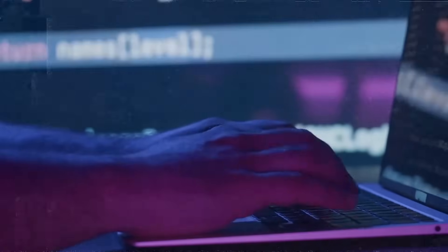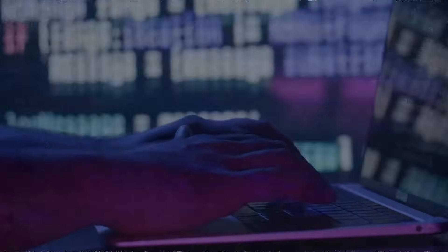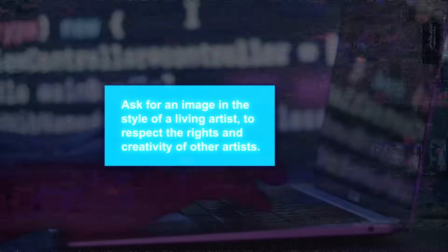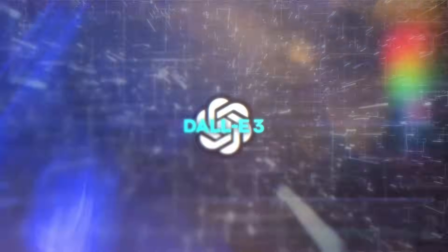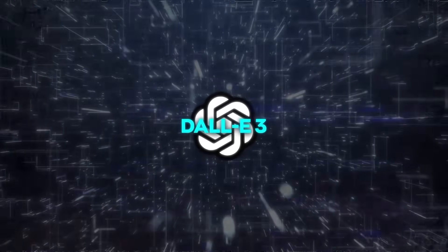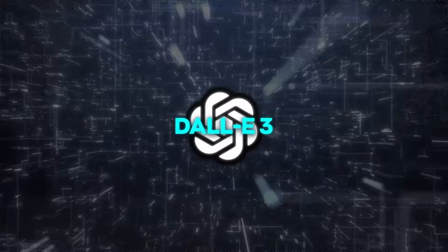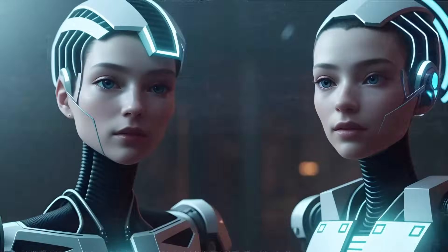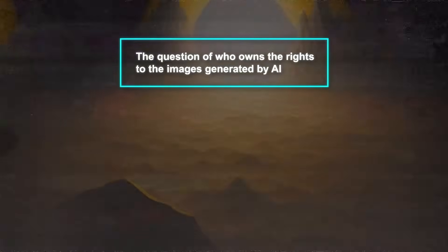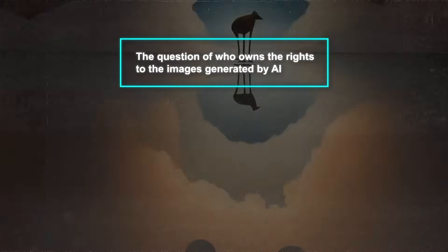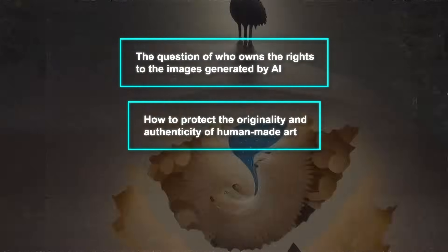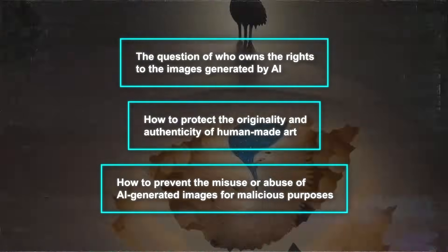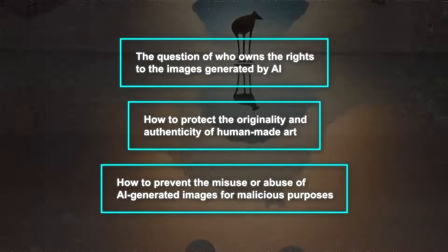OpenAI has also designed DALL-E3 to decline requests that ask for an image in the style of a living artist, to respect the rights and creativity of other artists. However, these steps are not enough to ensure the ethical and responsible use of DALL-E3. There are still many unresolved issues, such as who owns the rights to AI-generated images, how to protect the originality and authenticity of human-made art, and how to prevent misuse of AI-generated images for malicious purposes.